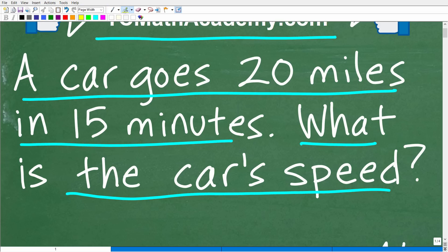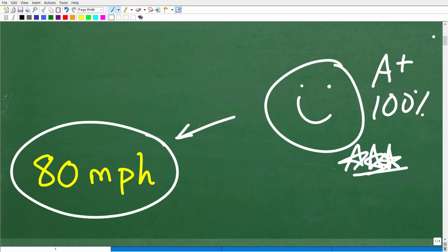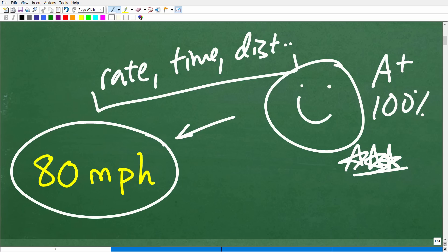If you figured this out, that is fantastic. We must celebrate by giving you a nice little happy face and a plus a 100% and multiple stars. So you can brag to your friends and family that indeed you can tackle word problems, math word problems that involve rate, time and distance. Because that's what this type of problem is. We're dealing with a rate, time and distance problem.